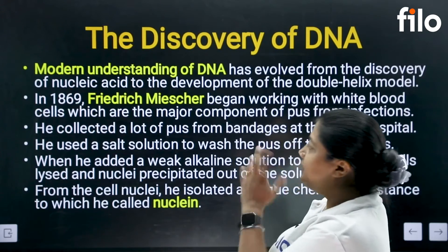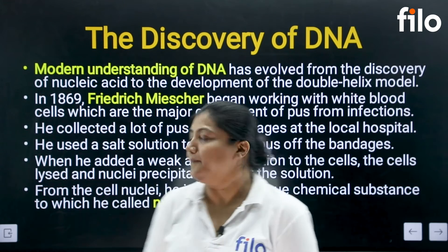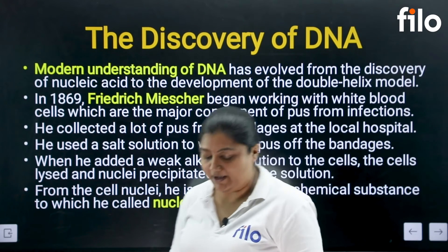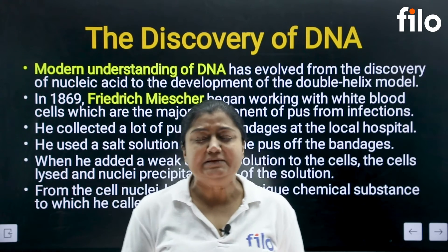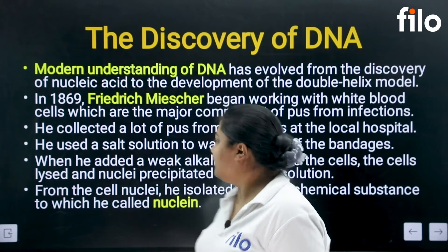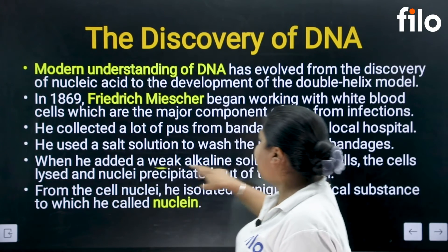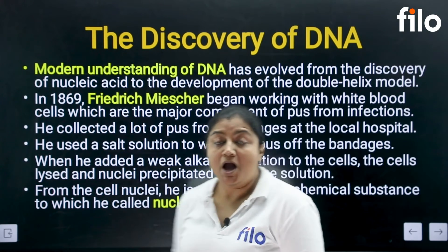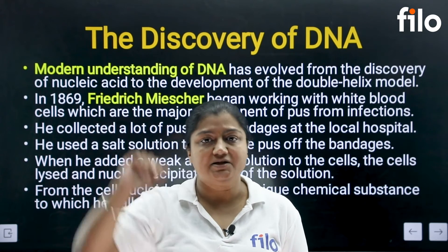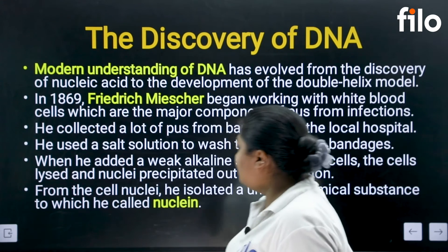Now, how was DNA discovered? This story is very interesting. There was a scientist named Frederick Miescher. He collected used bandages from local hospitals, washed them with a salt solution, and then added a weak alkaline solution. When the weak alkaline solution was added, the nucleus of the pus cells released its contents — and from that, nucleic acid was isolated.